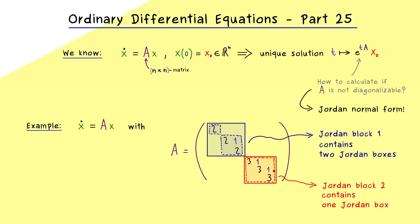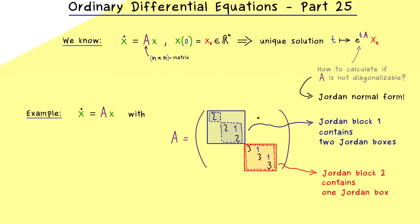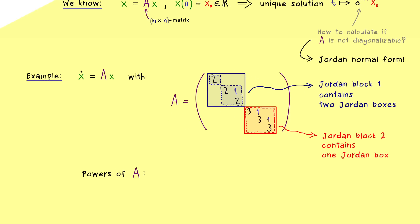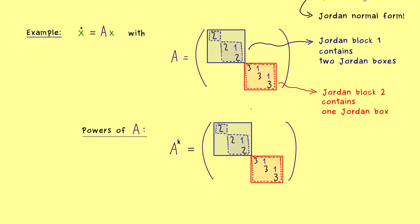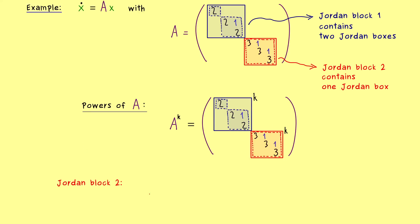The ones above the diagonal determine how many boxes we have in the blocks, which can make a whole difference in the Jordan normal form. Now we just want to calculate the matrix exponential for this given matrix. To do that we just need to calculate the powers of the matrix A, and for that this block diagonal structure is really helpful — simply because we can calculate the powers of the blocks separately. Let's start with the simple one: Jordan block 2.